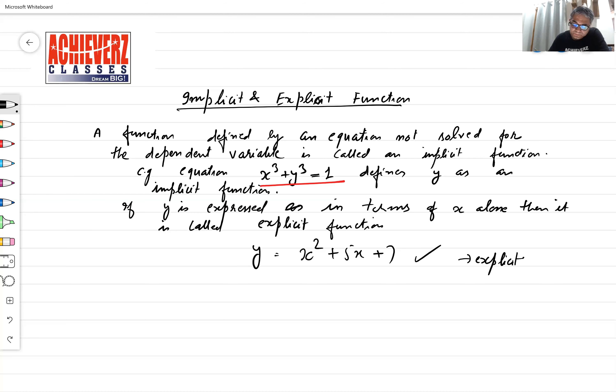Clearly defined that y, by directly putting x values, you will get it. So that type is called explicit. And if you have to do some calculation also, then it will be an implicit function. Just this thing you have to remember, no more tension needed.